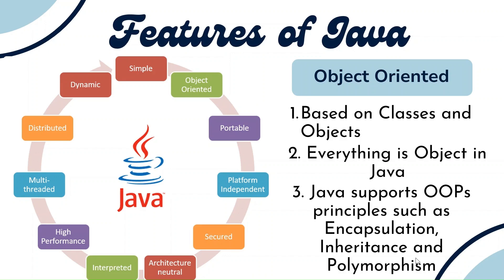An object holds memory for the instance variables we define. The object oriented programming concepts have been derived from C++, such as encapsulation, inheritance, and polymorphism. Encapsulation is the wrapping up of data — instance variables and methods — into a single unit; the best example is a class. Inheritance is acquiring the properties of the base class or super class into a subclass.